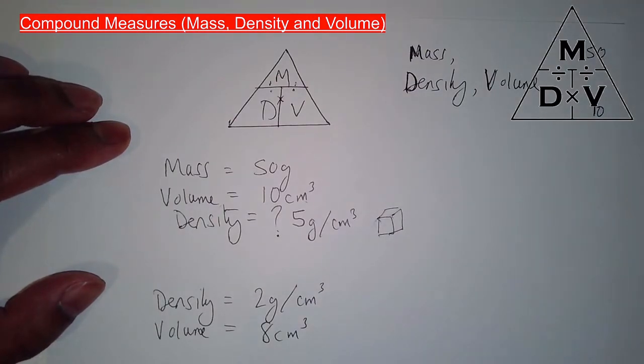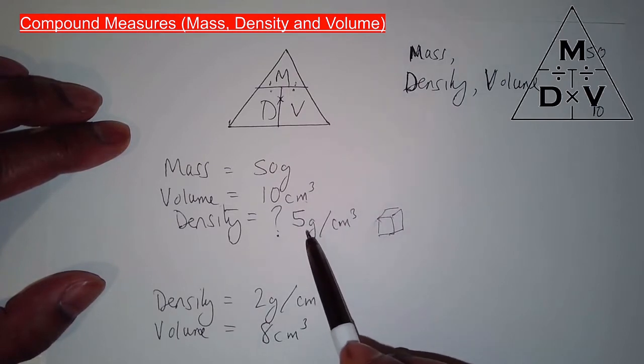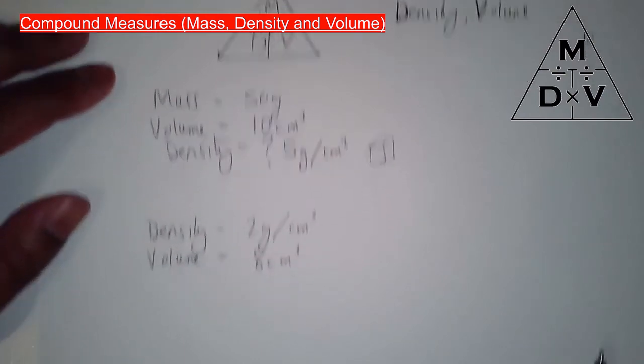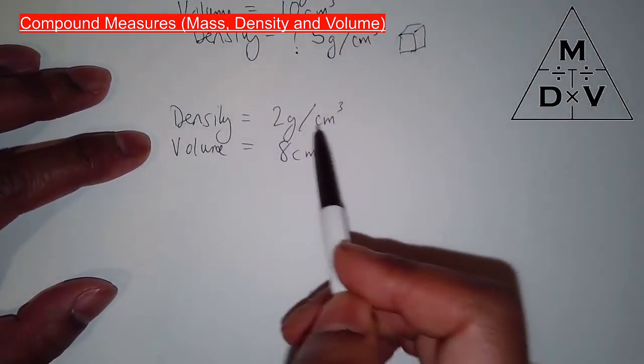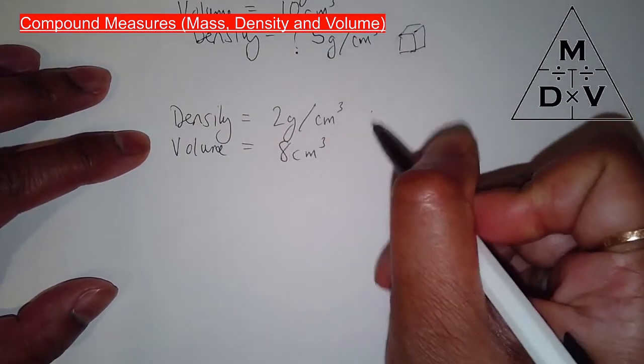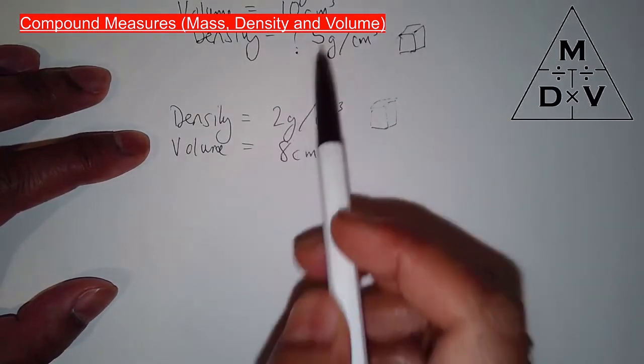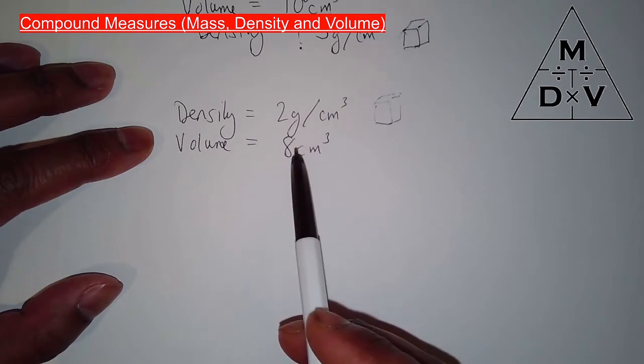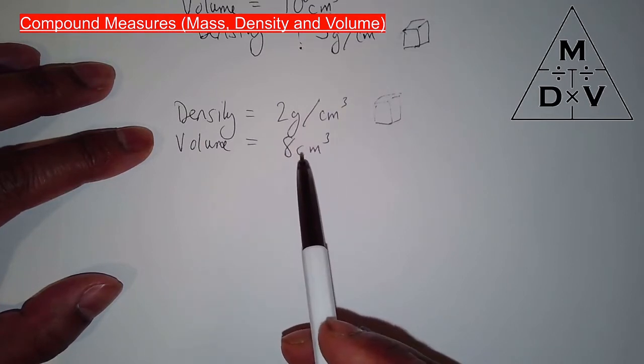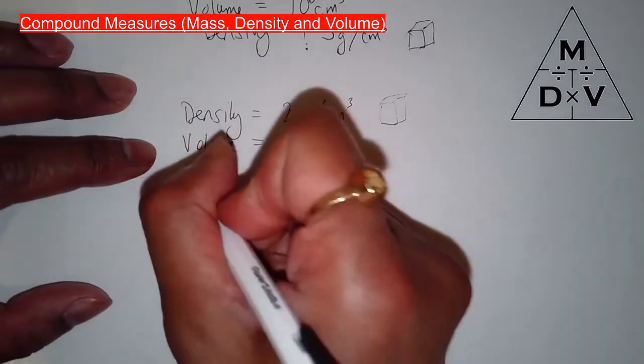And as you know, metals tend to have a higher density, a bigger density, so it would be more than 5 grams per cm³, most metals. Right, another question. Density this time is 2 grams per cm³, so 1 little cm³ is worth 2 grams, a little bit less than the other one. And its volume is 8 cm³. We need to work out its mass.